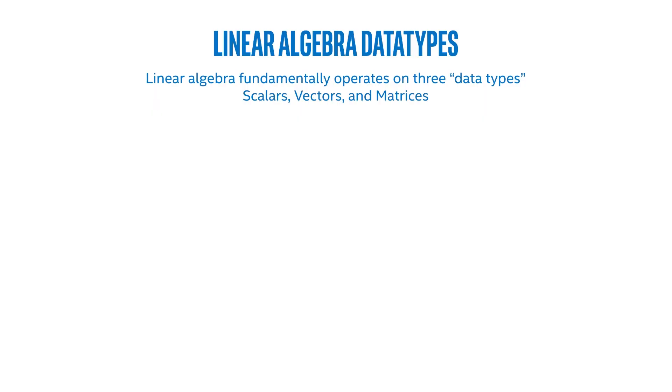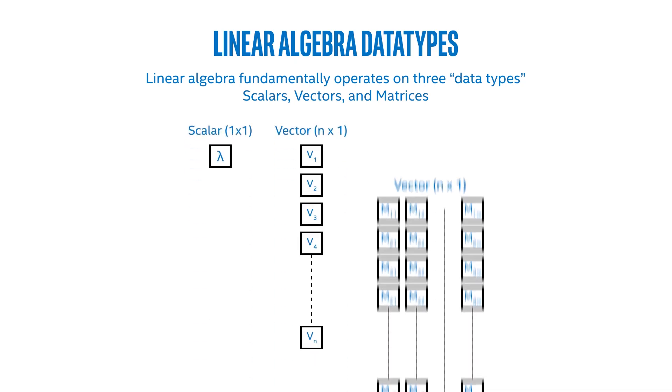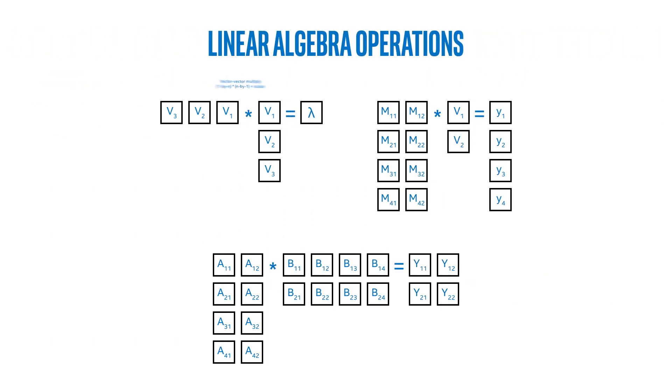So when I first tried to present overviews of computational patterns, I got really nervous. How can you possibly talk about all linear algebra in just a few slides? And then I realized it's actually quite easy. Linear algebra fundamentally operates on three data types: scalars, vectors, and matrices. Here's a scalar, here's a vector, here's a matrix. It has a few basic operations: vector-vector multiply, matrix-vector multiply, and matrix-matrix multiply.